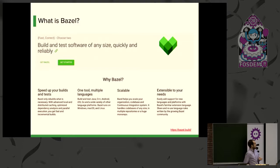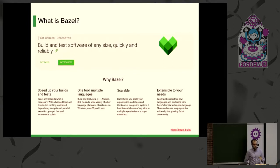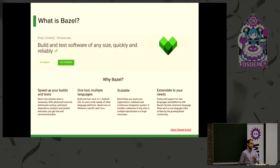By reliably, I mean you want your builds to be deterministic. So if you build the same thing twice in a row, they should give you the same results. And that's actually where sandboxing comes into play. But before we get into sandboxing, I have to tell you a little bit about how Bazel actually models things.